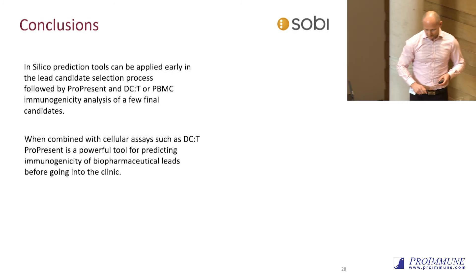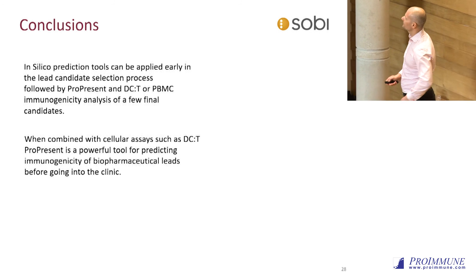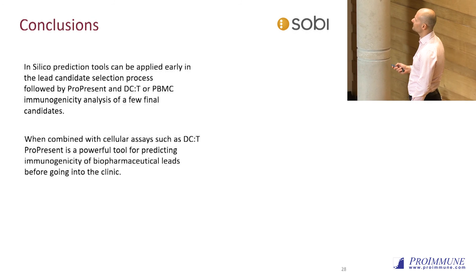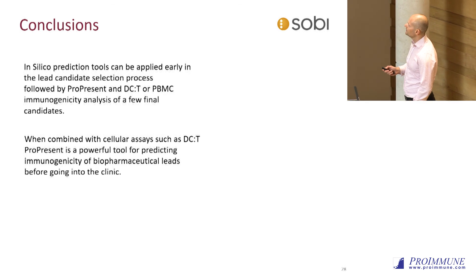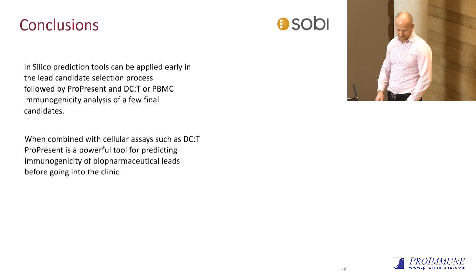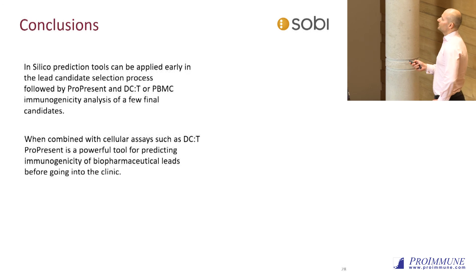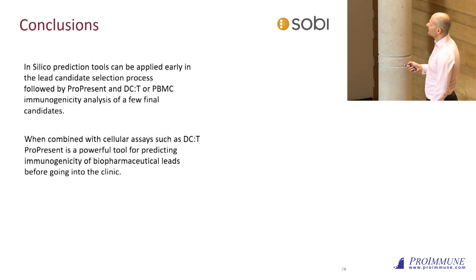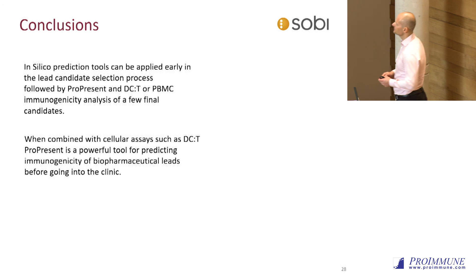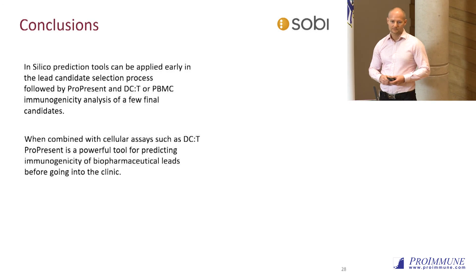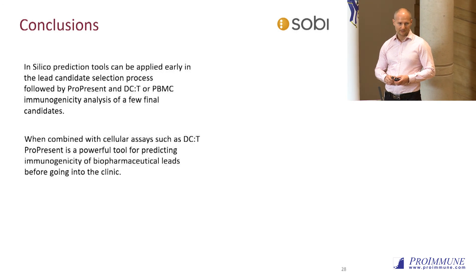My conclusions: in silico prediction tools can be applied early in the lead candidate selection process, but they have to be followed by other assays like ProPresent or DCT or PBMC immunogenicity analysis when you're down to a few final candidates. When combining cellular assays such as DCT with ProPresent, you have a very powerful tool for predicting immunogenicity of biopharmaceutical leads before going into patients. Thank you.